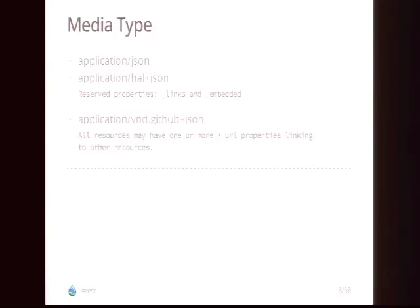HAL is actually a standardized media type — it's an IETF draft. But you can also have vendor-specific media types. GitHub has their own media type, application/vnd.github+json, with their own rules for what consumers can expect. They say all resources may have one or more _url properties linking to other resources. That provides the same functionality as HAL but in a way that's specific to GitHub.